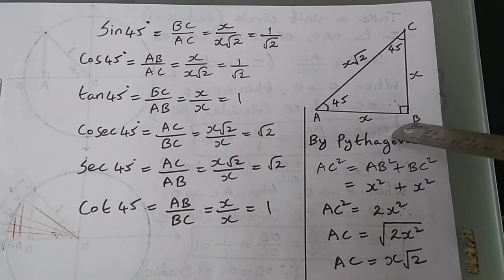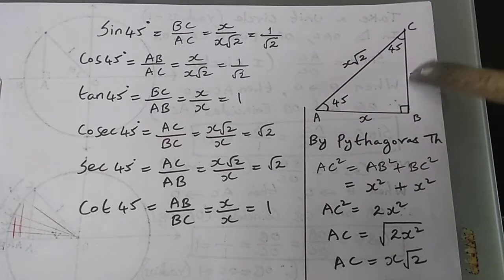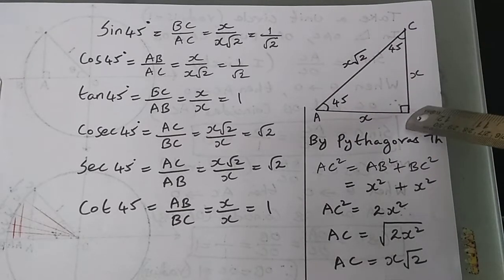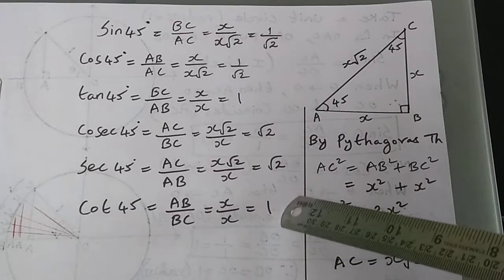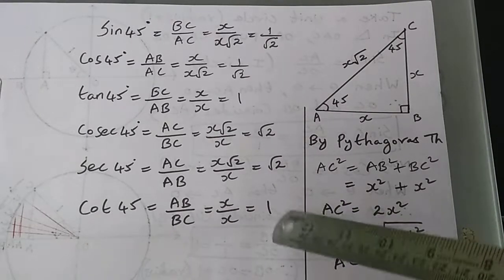Next, cot 45 is adjacent by opposite, so AB/BC = X/X, which equals 1.